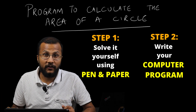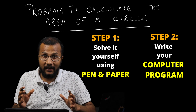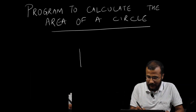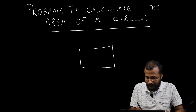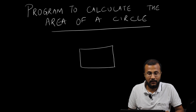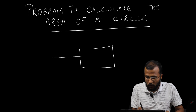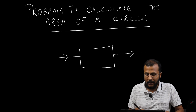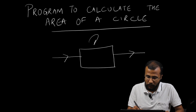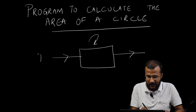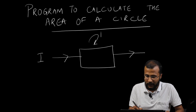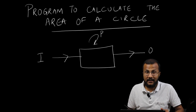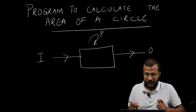First of all, let's try to visualize the area of a circle program in terms of IPO — input, processing, and output. Let's say this is a program to find the area of a given circle. What would be the input for this particular program? What would be the output, and what would you do in the processing phase? What would be the input I, what do you do in the processing P, and what would be the output O? Let's try to visualize this area of a circle problem using IPO.